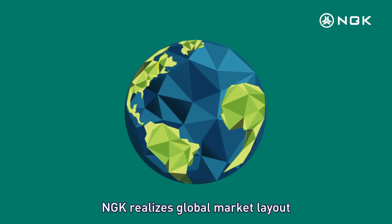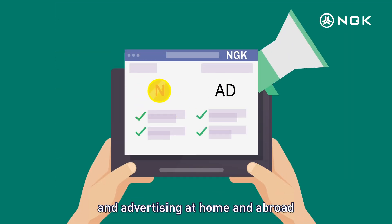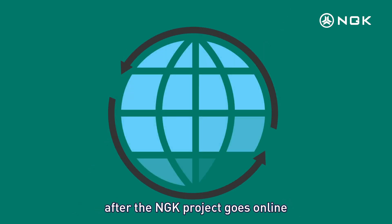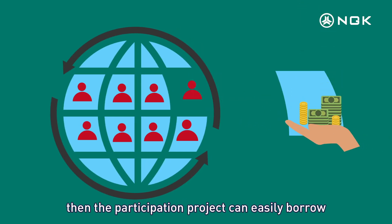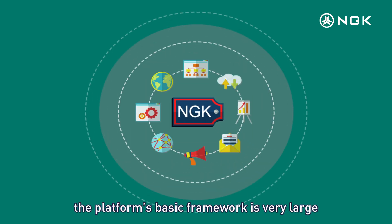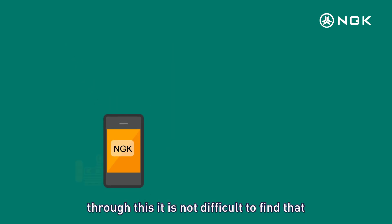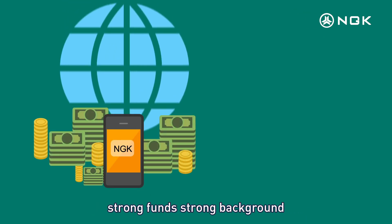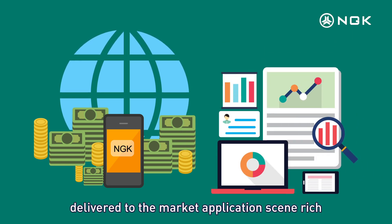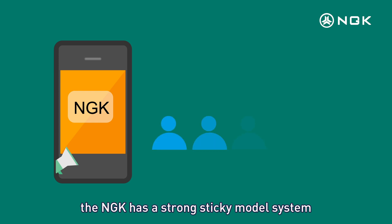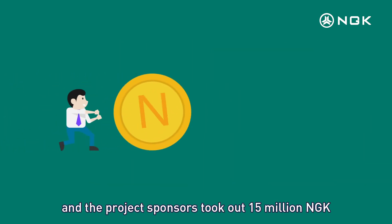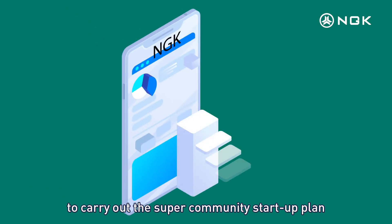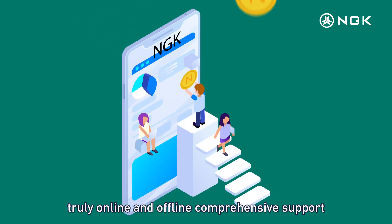Marketing Advantage. NGK realizes global market layout, with multi-capital support and the massive push of information and advertising at home and abroad, so the market coverage will be wide after the NGK project goes online. The market participation heat will be high, and NGK is the blockchain project with a very large platform framework, demonstrating strong funds and strong background, with rich market application scenarios. In terms of promotion, NGK has a strong, sticky model system that is easy to understand, can make community efficient replication, and the project sponsors took out 15 million NGK to carry out the super-community startup plan, with truly comprehensive online and offline support.